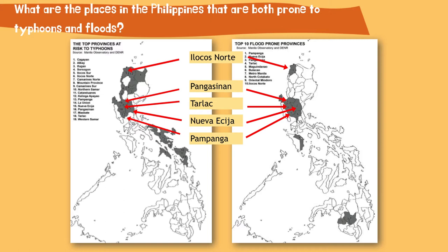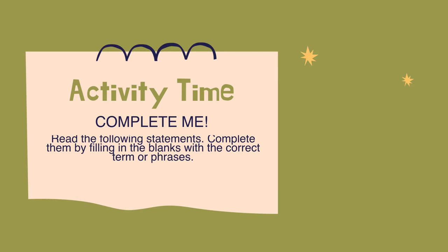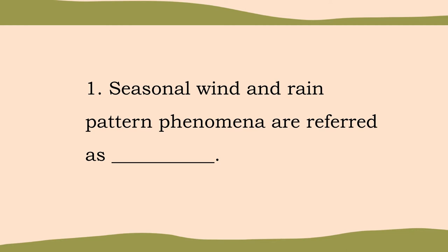Now let's proceed to Activity 4, entitled Complete Me. You will read the following statements and complete them by filling in the blanks with the correct term or phrase. Statement number 1: Seasonal wind and rain pattern phenomena are referred to as blank. The answer is monsoon.